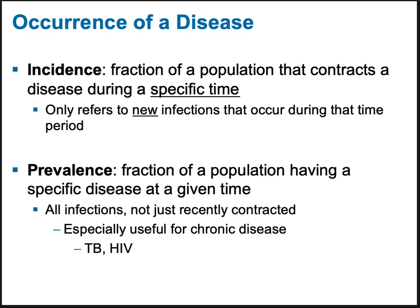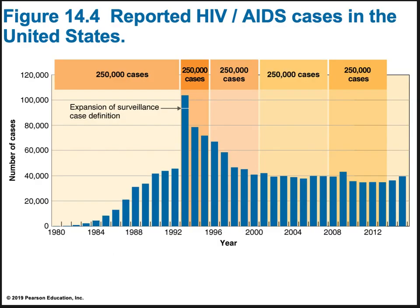In the eighties there was a huge, rapid increase in HIV cases. As public health programs for testing, treatment, and education were implemented, we saw a decline. The graph shows cases up to around 2013. Much of the apparent spike was due to expansion of surveillance — the actual increase from 1992 to 1993 accounts for a portion, while the rest is due to expanded surveillance reporting.